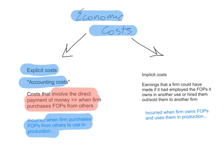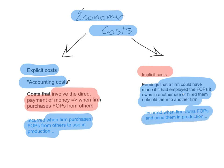Implicit costs, on the other hand, are the earnings that a firm could have made if it had employed the factors of production it owns in another use, or hired them out or sold them to another firm. For example, if the firm owns a building and uses it as its office space, by doing so the firm is missing out on hiring that building to someone else and earning rental income. That rental income is an implicit cost — the opportunity cost of using your own resources instead of selling or hiring them out.